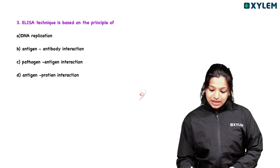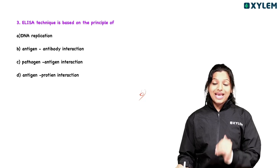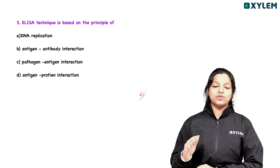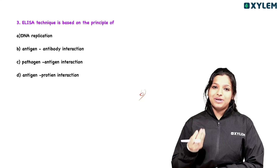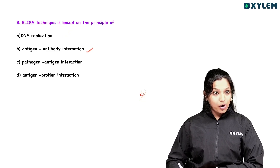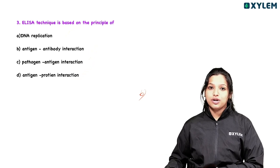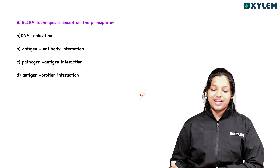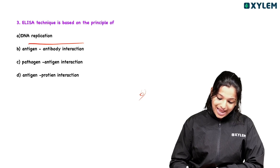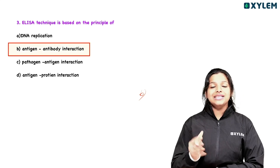Question three: The ELISA technique is based on the principle of — options include DNA replication, antigen-antibody interaction, antigen-protein interaction. The answer is antigen-antibody interaction. That is the principle on which ELISA is based. This is an important item.